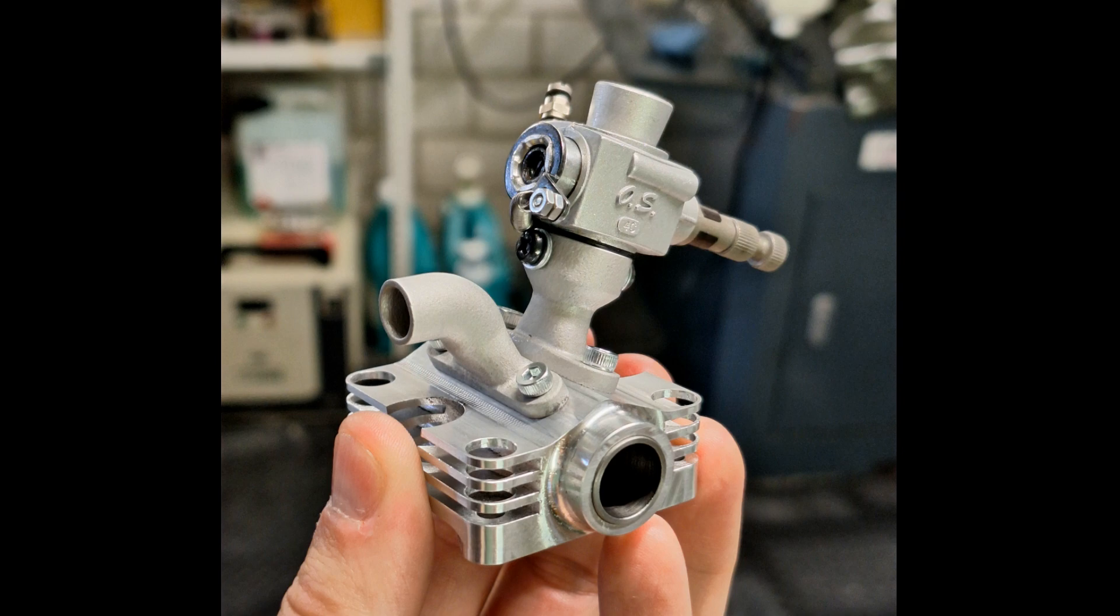The intake and exhaust were 3D printed from aluminum. To ensure that the rotary valve will not seize up and is well supported, I installed a cast iron sleeve in the cylinder head. The carburetor is an 8 millimeter OS type 4C.